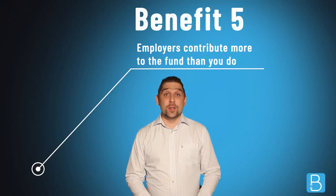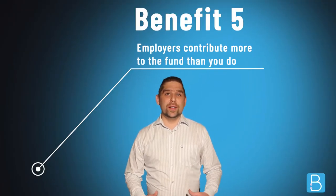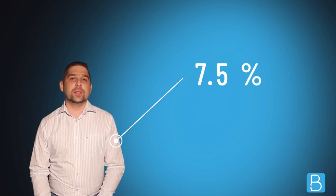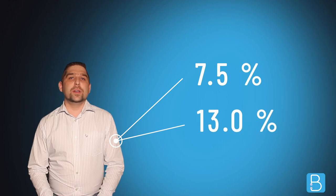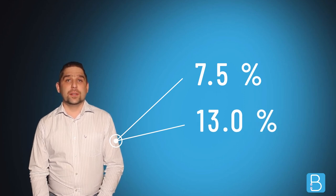Benefit number five: Your employers contribute more to the fund than you do. This is one of the best features of the GPF. Your contribution is only 7.5% of your pensionable salary, while your employers contribute 13%. This ensures that you can make the most of your salary now, and you're putting a decent amount away towards retirement.